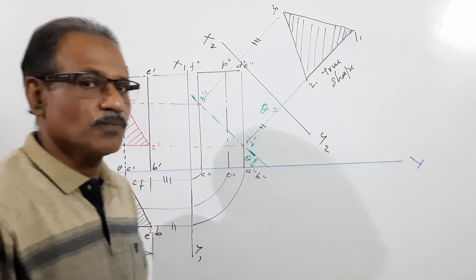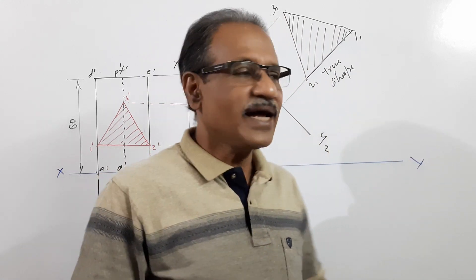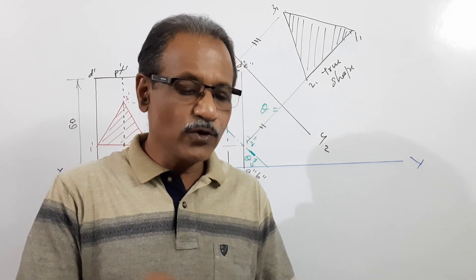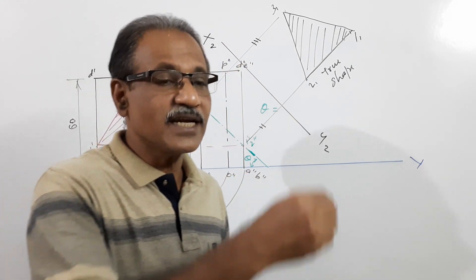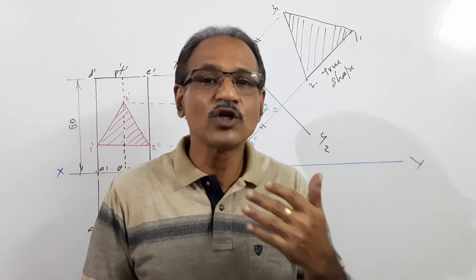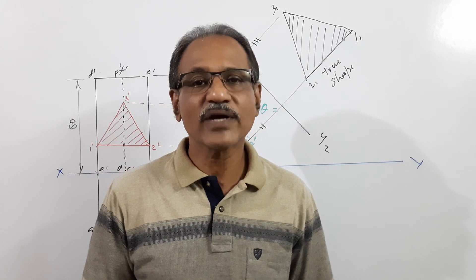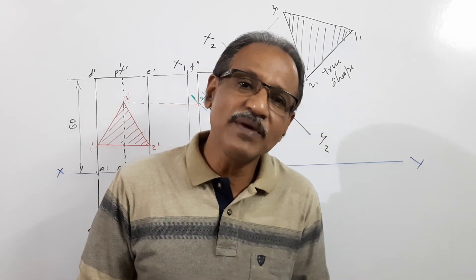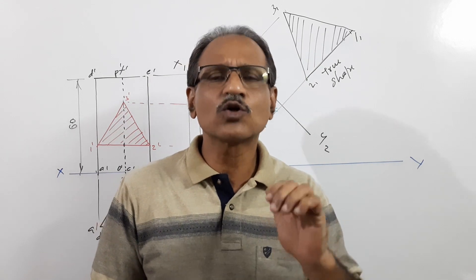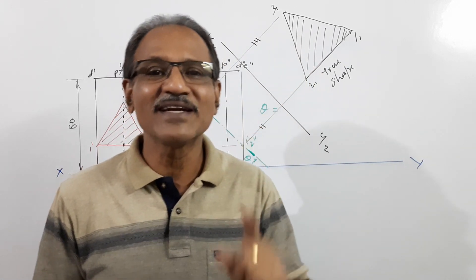This is a slightly difficult question. The statement of the question is not very clear — they didn't ask about the true shape. Instead of saying 'the section in front view is an equilateral triangle,' they could have added a few more words to specify it more clearly, such as 'the sectional front view is an equilateral triangle.' A good question must convey everything without causing doubt. This question can even confuse teachers.